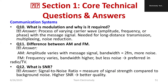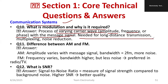From communication systems: what is modulation and why is it required? Modulation is the process of varying a carrier wave — its amplitude, frequency, or phase — in accordance with the message signal. It is used for long-distance transmission to minimize losses, and it enables multiplexing and noise reduction.